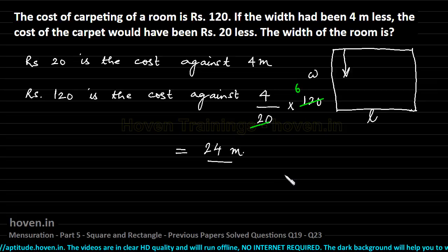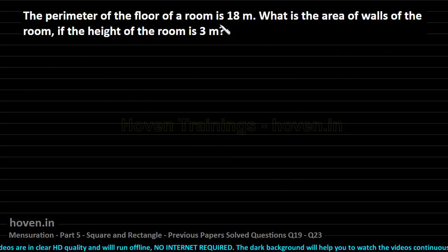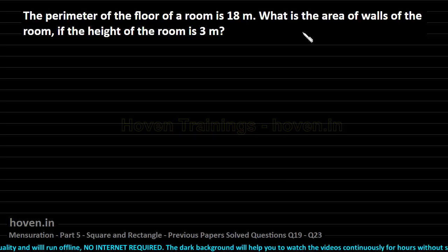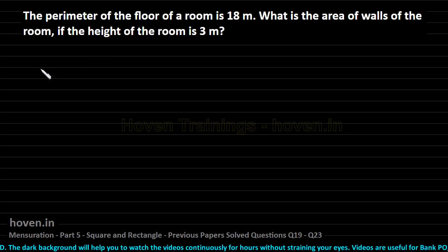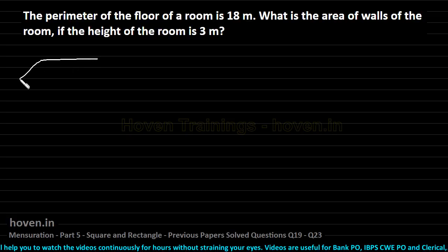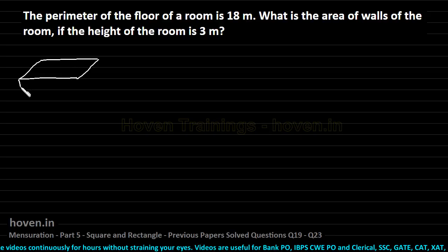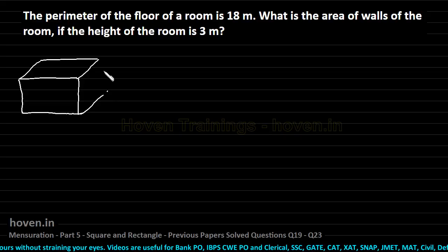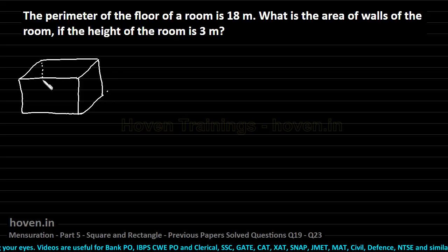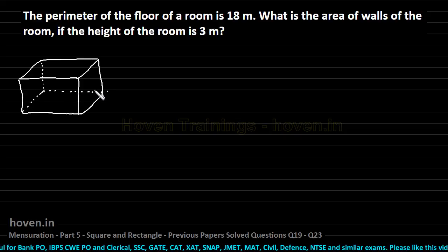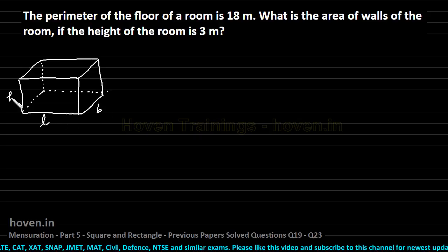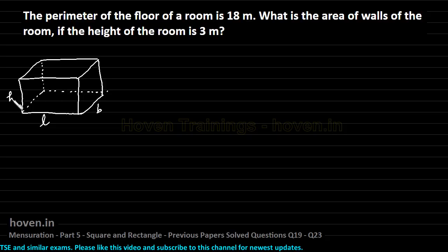Let us move to our next question. The perimeter of the floor of a room is 18 meters. What is the area of the walls of the room if the height of the room is 3 meters? Let us first draw a schematic — suppose the room looks like a cuboid. Let this be the length, this be the breadth, and this be the height. We derived a formula earlier about the area of the 4 walls in terms of height, length, and breadth — let us derive it now.